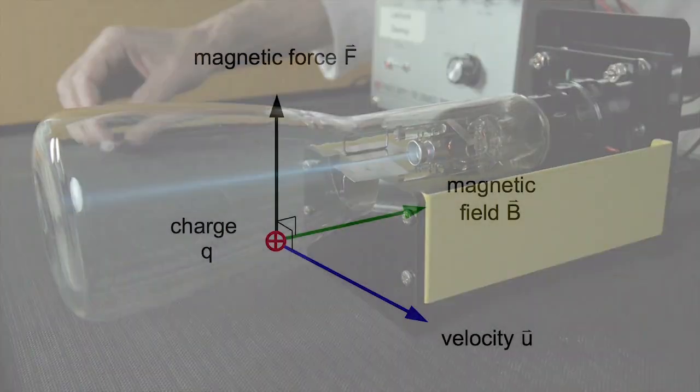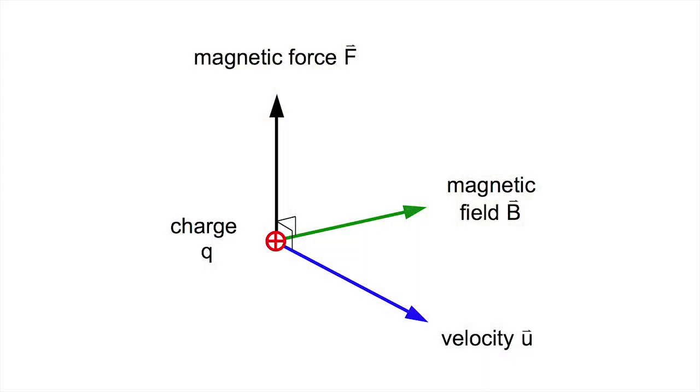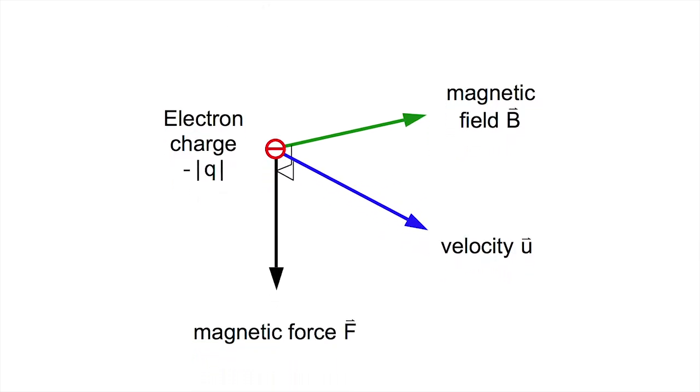So what's wrong? Electrons have negative charge, which flips the direction of the force. So the magnetic force law does work here.